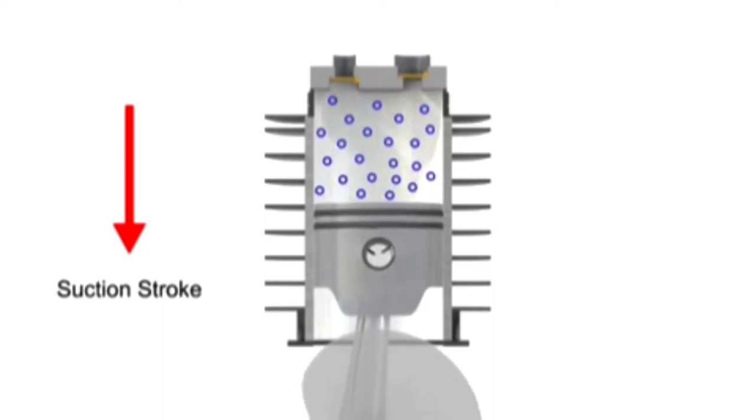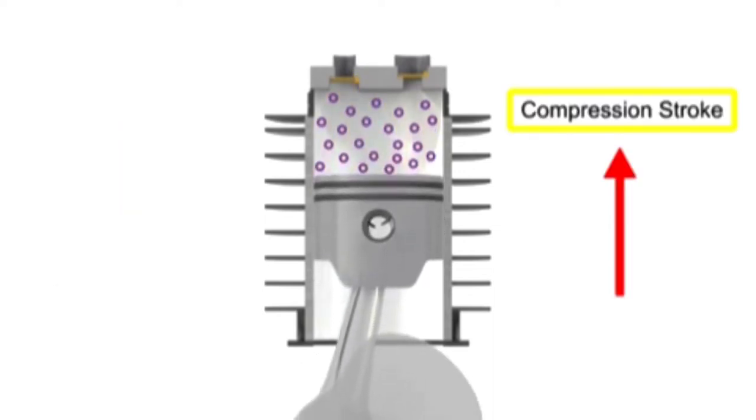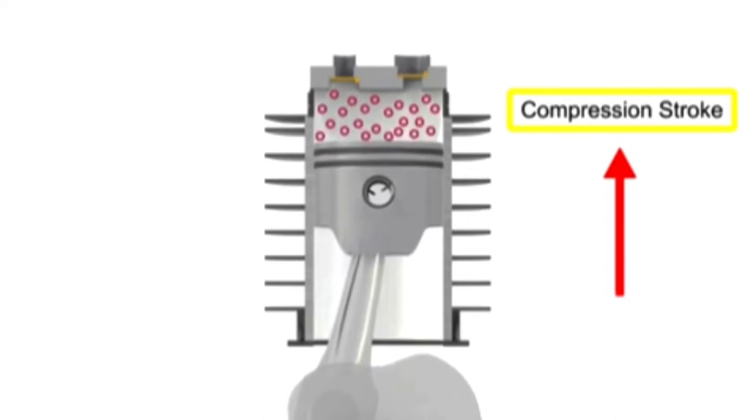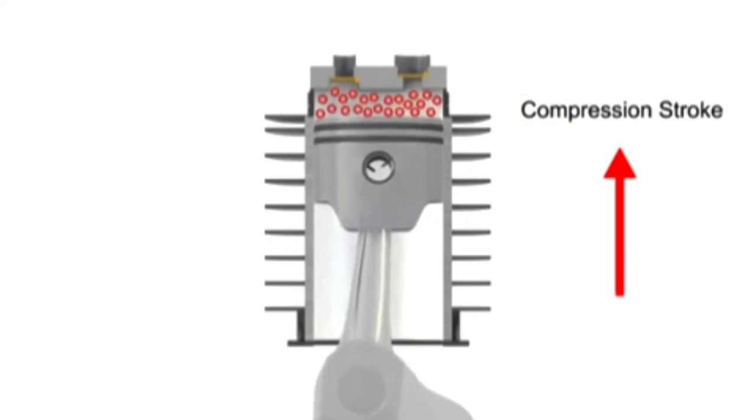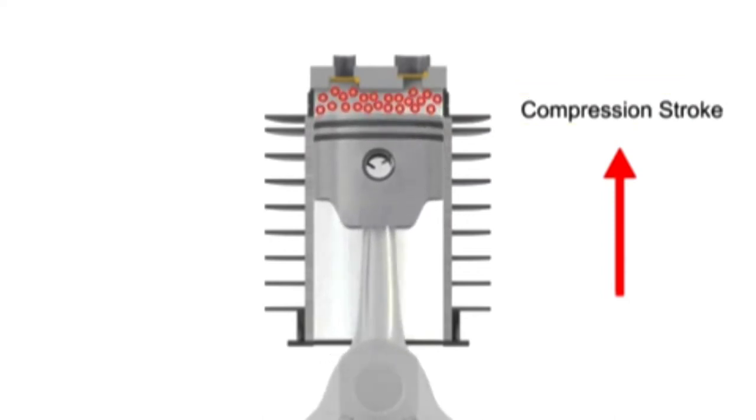As the piston begins its upward compression stroke, the volume within the cylinder decreases. The decrease in volume causes the pressure within the cylinder to increase. The increase in pressure opens the outlet valve and compressed air discharges from the cylinder.